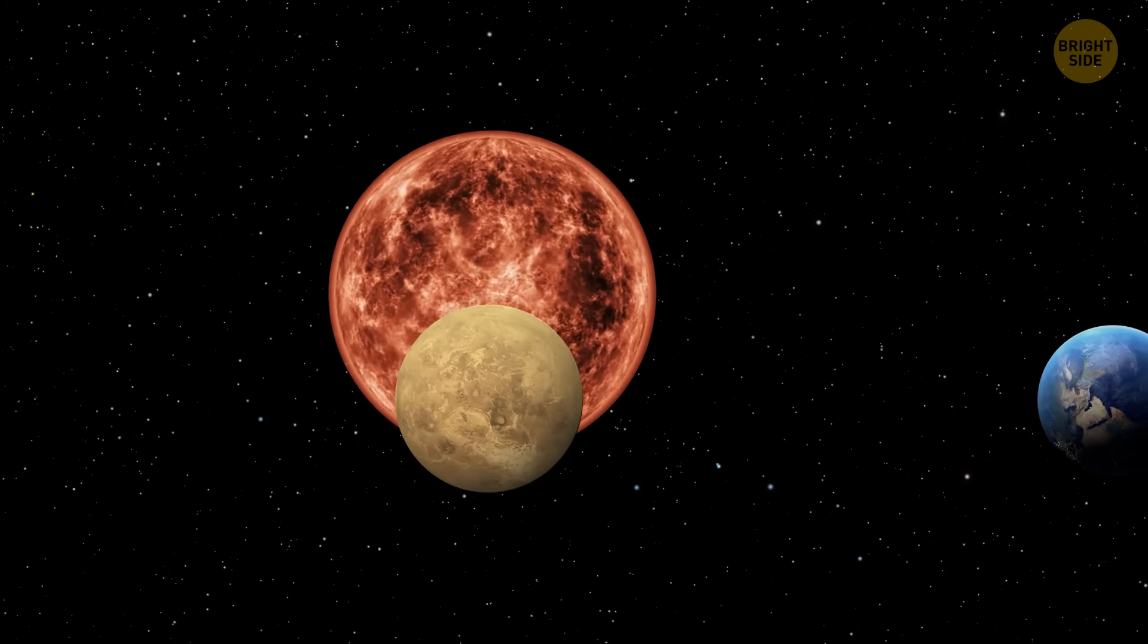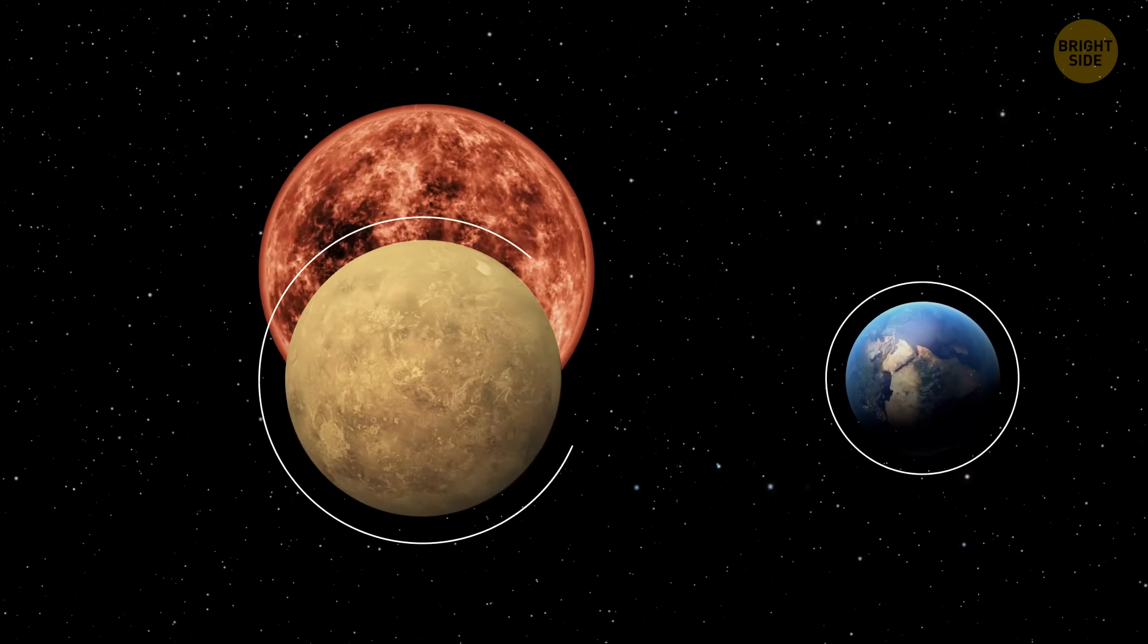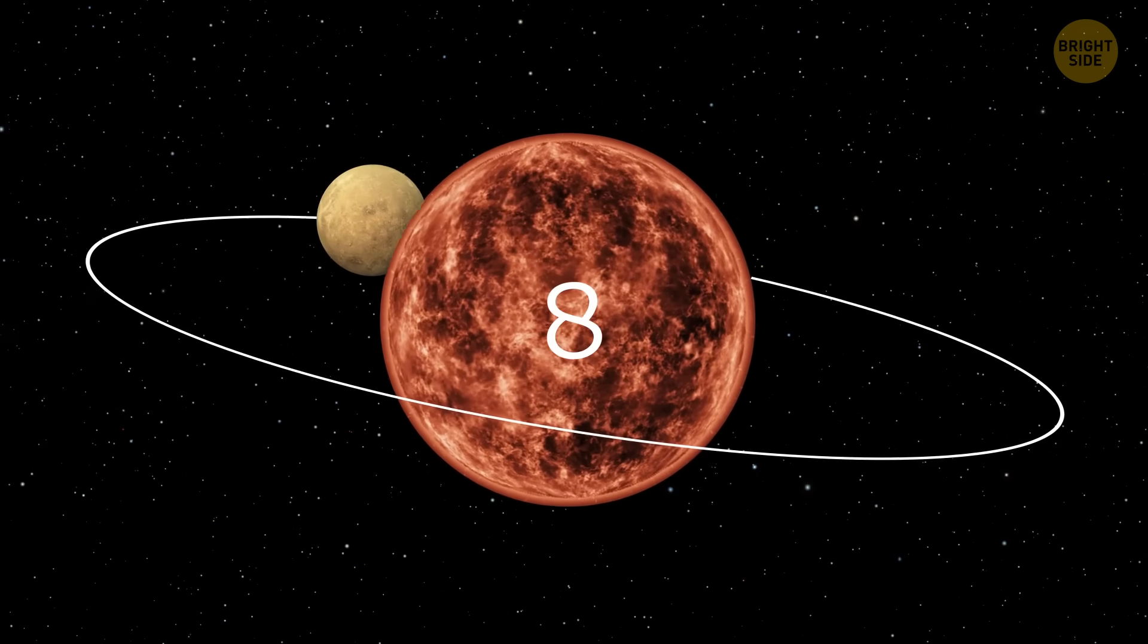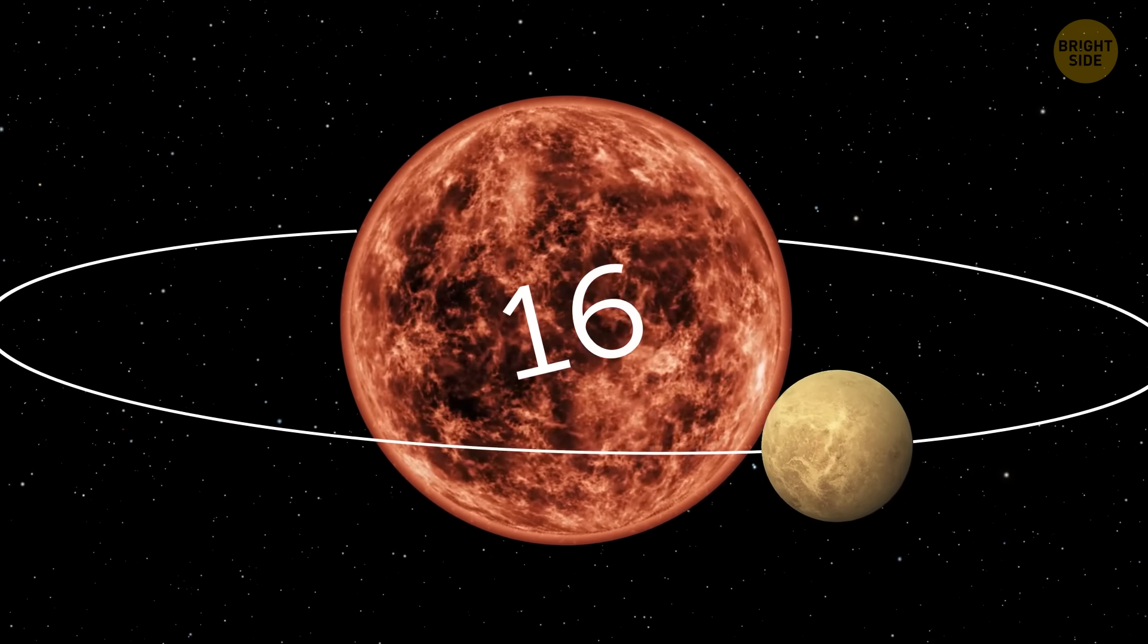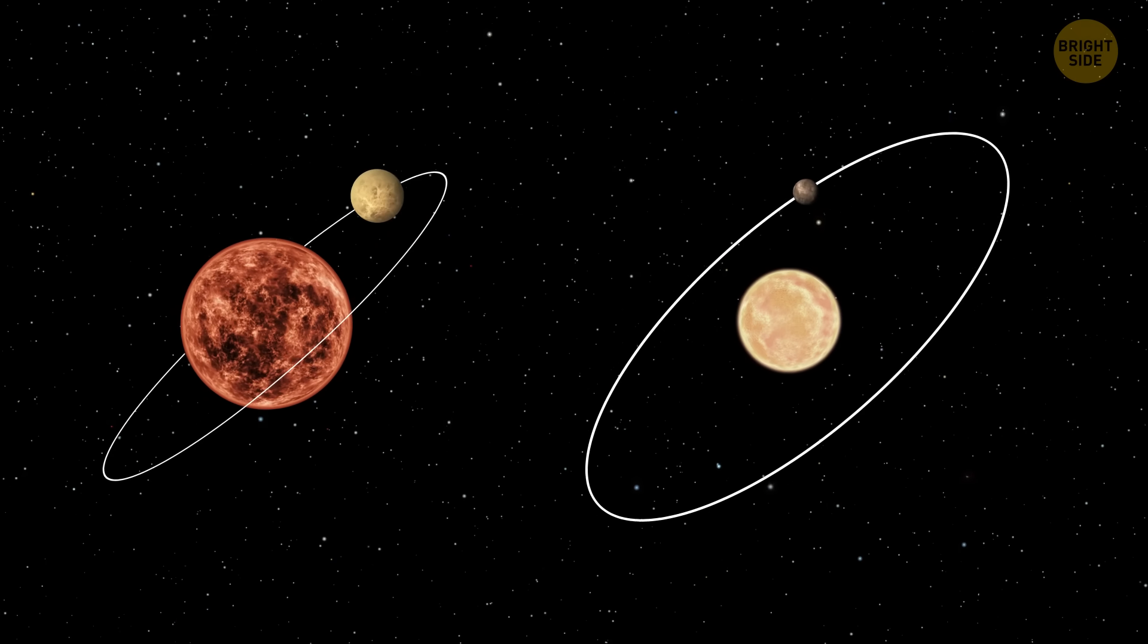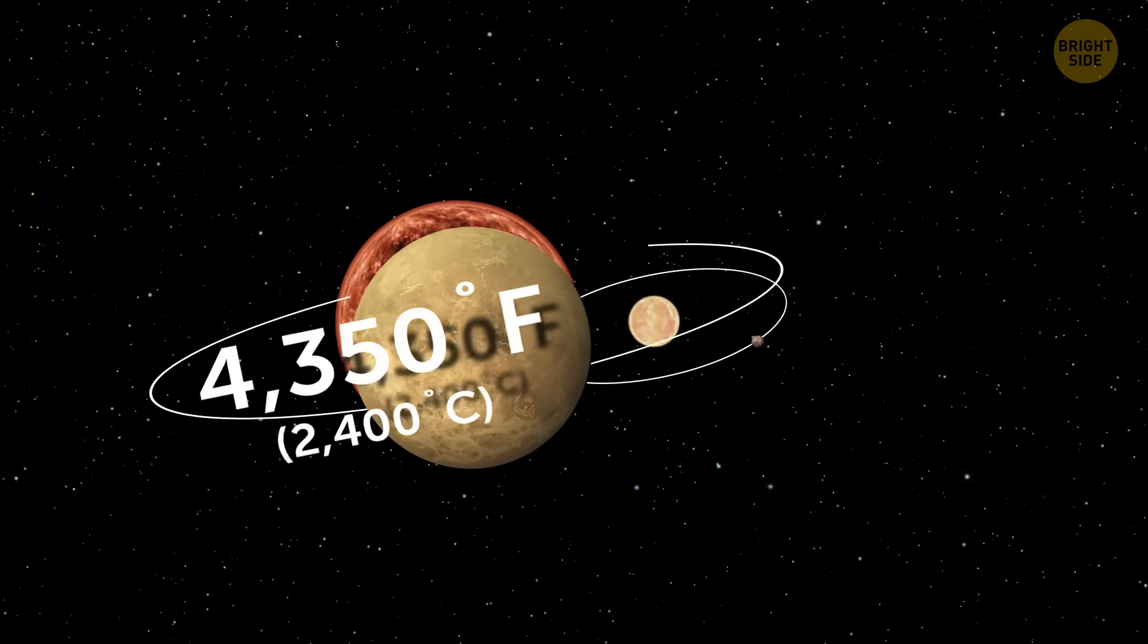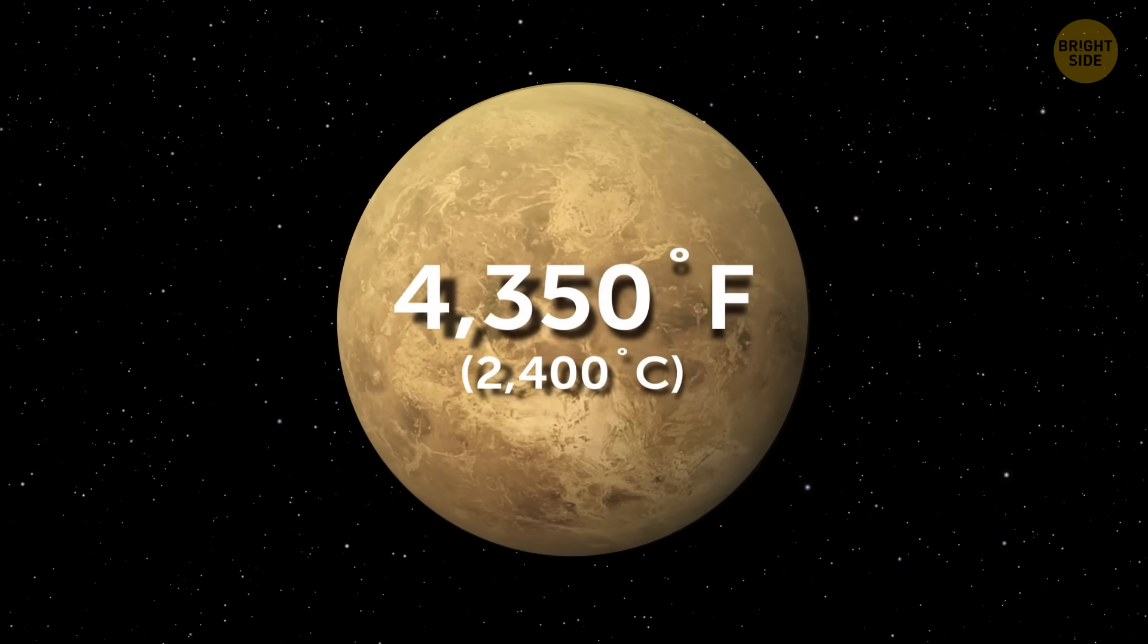This is a scorched super-Earth, eight times the mass of our planet, and it orbits its star in just over 17 hours. Yep, the year on this planet is shorter than one day on Earth. Plus, it's 25 times closer to its star than Mercury is to our Sun. No wonder the planet's surface reaches blistering temperatures of 4,350 degrees Fahrenheit. That's hot enough to melt nearly any known metal.